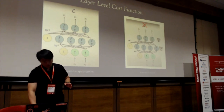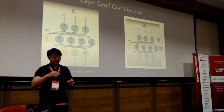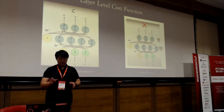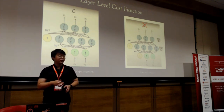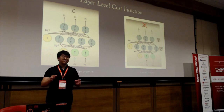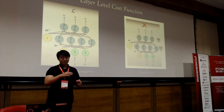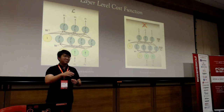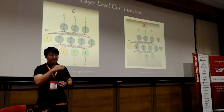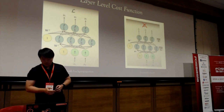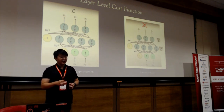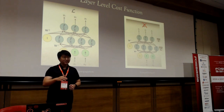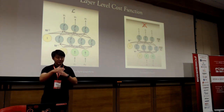Another difference is that backpropagation has only one cost function at the end, evaluating how well the predicted value matches the actual value. Forward-Forward, however, has multiple cost functions — a single cost function in every single layer.